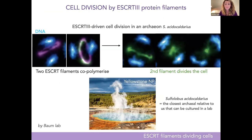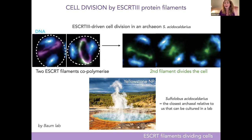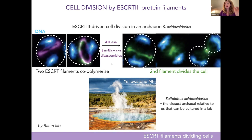Buzz grew the closest archaeal relative to our cells that can be cultured in the lab — it's called Sulfolobus, from Yellowstone National Park, living at extreme conditions like pH 2 and 80°C. It took them a couple of years to develop a microscope to image the division of these cells. What they observed is: first one filament forms in the middle of the cell — this is the ESCRT-III filament shown in pink — and that filament templates another ESCRT-III filament, a different isoform, shown in green. Together these two filaments sit happily and nothing happens. Then energy is consumed as ATP: an ATPase comes and degrades the template filament — the pink one — so it disassembles, and then the green filament somehow squishes the cell in two.